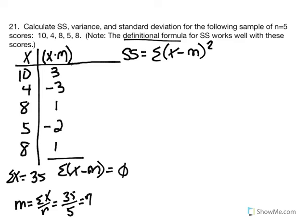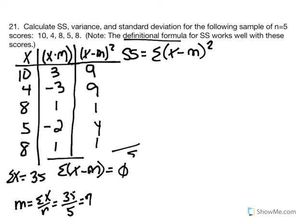Therefore our mathematical solution requires that we take all our deviations and square them. The summation of those squared deviation values will no longer equal 0. Squaring: 3 squared is 9, negative 3 squared is 9, 1 squared is 1, negative 2 squared is 4, 1 squared is 1. This whole process requires that we square the deviations — by definition, variance is the average of the squared deviations. Now we take the summation of all squared deviation scores, and we get 24.